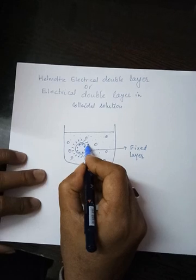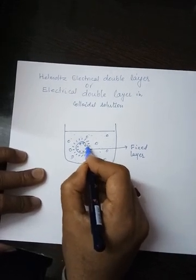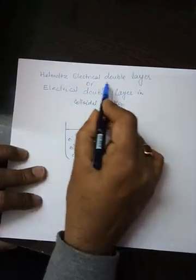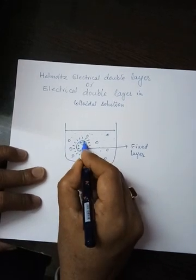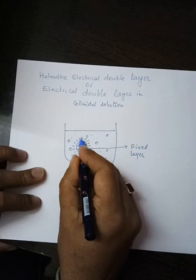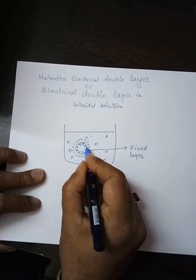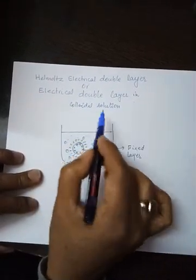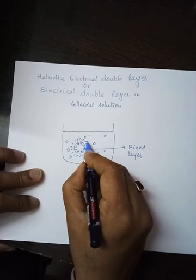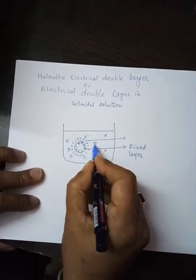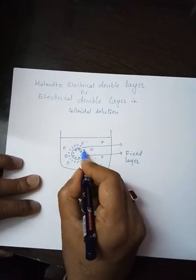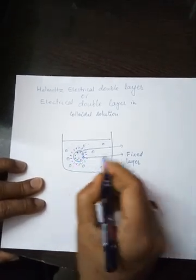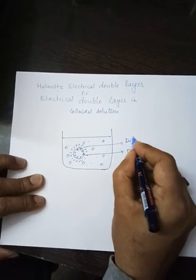These two layers — the positively charged layer on the colloid and the adjacent negatively charged layer — together are known as the Helmholtz electrical double layer, or electrical double layer in colloidal solution. The negatively charged layer is in the solution, and these particles are regularly being replaced. This layer is not fixed; it can move and change, so it is known as the diffuse layer.